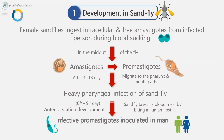After 4 to 18 days, depending on the species, promastigotes migrate into the pharynx and mouthparts, where partial or complete blockage may be produced. The parasites are dislodged by the efforts of the blocked sandfly to ingest blood. A heavy pharyngeal infection is usually seen between the sixth and ninth day of the infective blood meal. This type of development is called anterior station development.